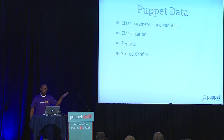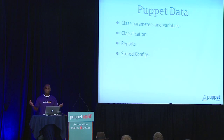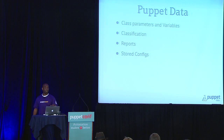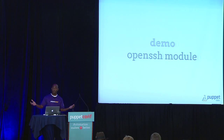There's a lot more to the data story than this, but the biggest parts are class parameters and variables. I also consider classification part of the Puppet Data model. Reports — things that happen after the run — we get metrics, how long it took, what resources passed, what resources failed. You can do a lot with that data. And then store configs. In this talk, we're mainly going to focus on class parameters and variables, which are the first steps you need to get to a point where you can use features like an ENC, Hiera, and sharing modules on the Forge. I have an OpenSSH module and we're going to look at some real Puppet code for a service we all know: OpenSSH.